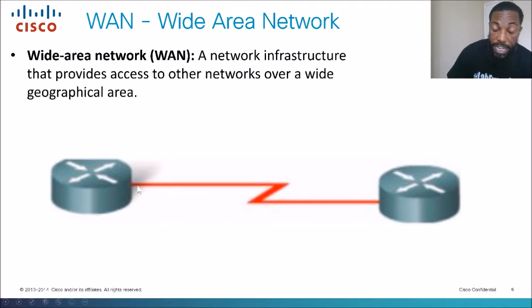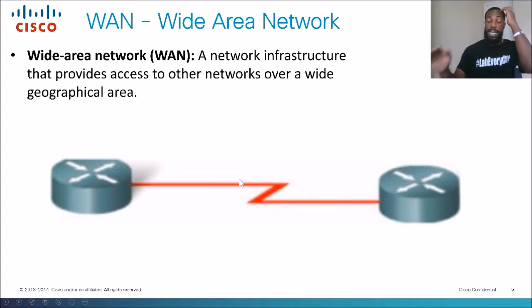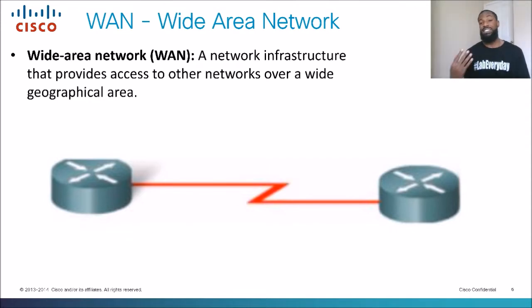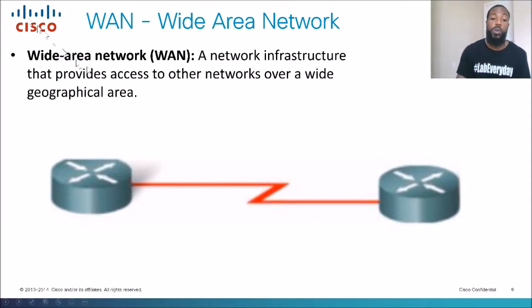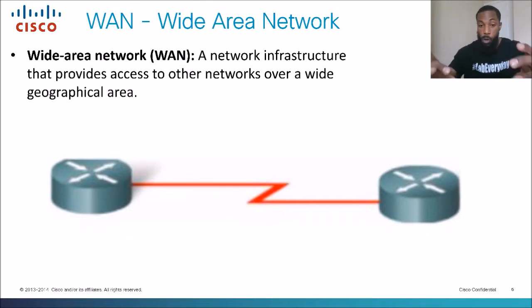In a network topology or logical view, the wide area network is typically indicated by a little lightning-bolt-looking symbol. This could indicate a serial line or some sort of leased line from your ISP, such as CenturyLink or Spectrum. That's how your information would travel over the wide area network or the internet.